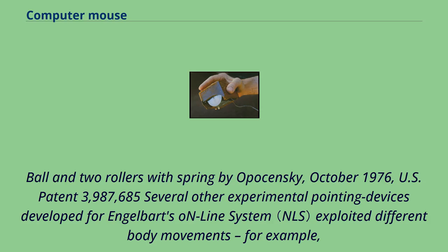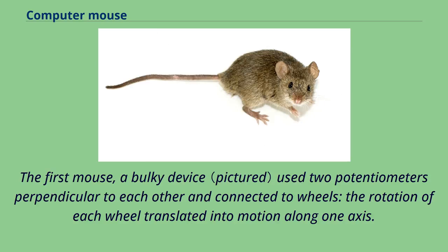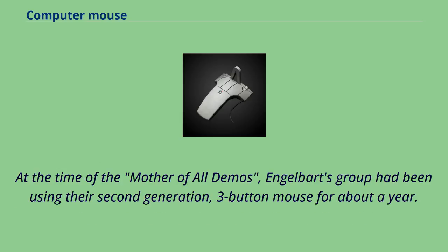Several other experimental pointing devices developed for Engelbart's online system exploited different body movements, such as head-mounted devices attached to the chin or nose, but ultimately the mouse won out because of its speed and convenience. The first mouse used two potentiometers perpendicular to each other and connected to wheels. At the time of the mother of all demos, Engelbart's group had been using their second-generation, three-button mouse for about a year.